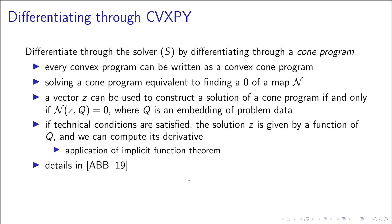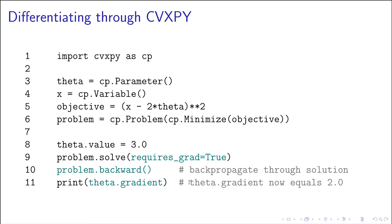So here's some code. This is our baby example from before, (x - 2θ)², and in order to get gradient information in CVXPy, you just add requires_grad=True when you solve. That'll make sure all the appropriate information is cached, and then you can call problem.backward, and that will compute the derivative and back-propagate a gradient value to all the parameters.